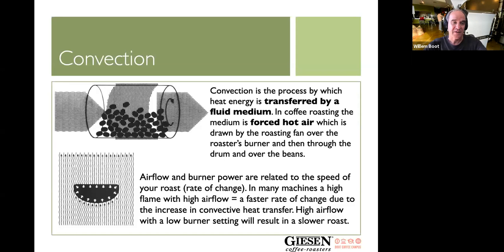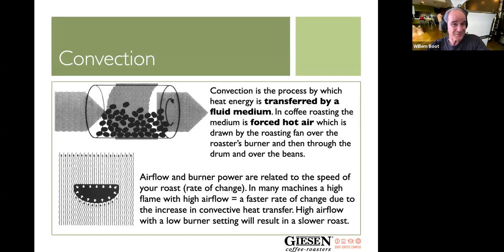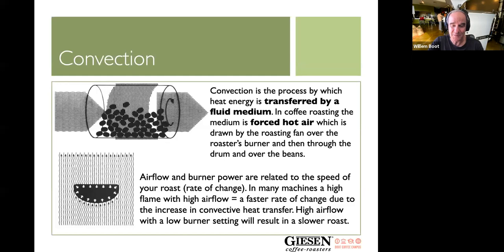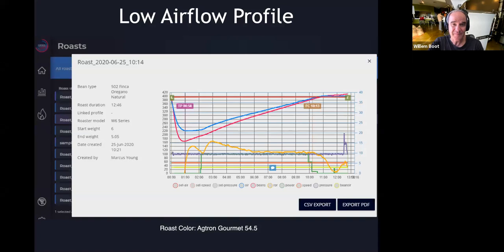So the Giesen roaster is a tool to modulate its heat transfer in ways comparable to other roaster brands. If you're coming from a different brand of roaster and diving into a relationship with Giesen, you can actually allow your Giesen to roast like that other brand you're used to. Here at Boot Coffee Campus we have a lot of different Giesen machines available for you to try this out.